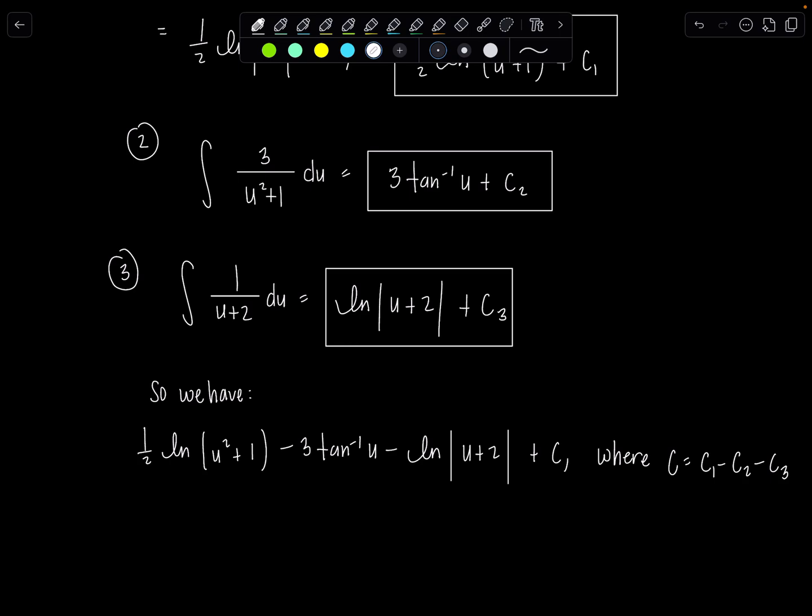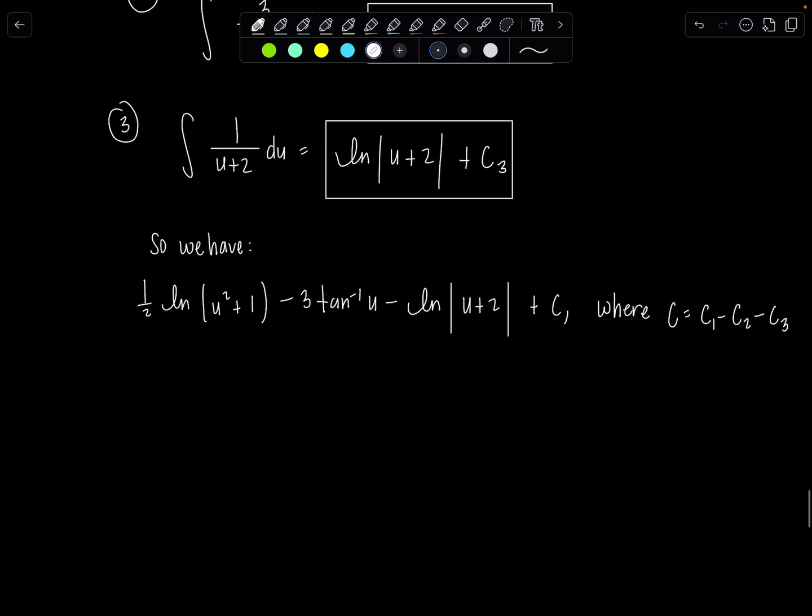And then we're not done. Remember u was that's right sine of theta. So this is one half natural log sine squared theta plus 1 minus 3 tan inverse sine theta minus natural log. Again sine theta is bounded between 1 and negative 1. So if I add 2 that won't ever be negative. So that's why I switch to parentheses. And then now we're done.